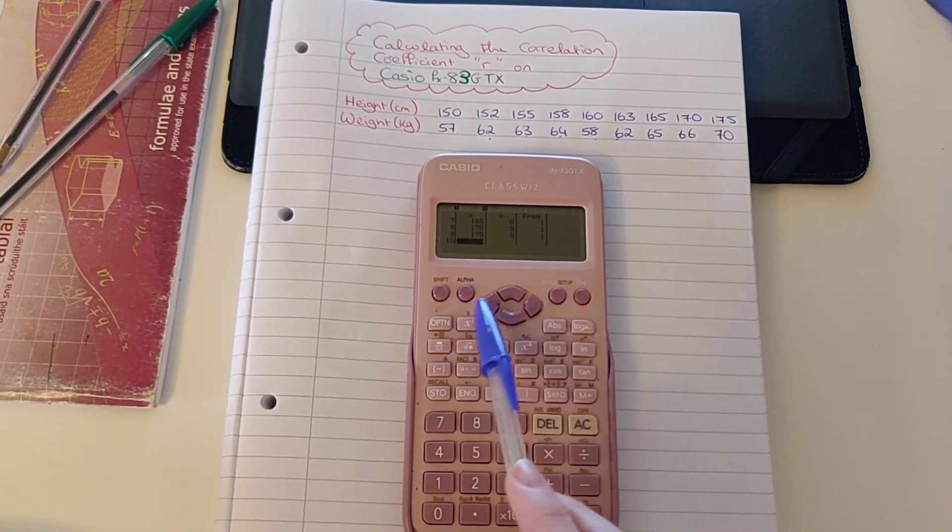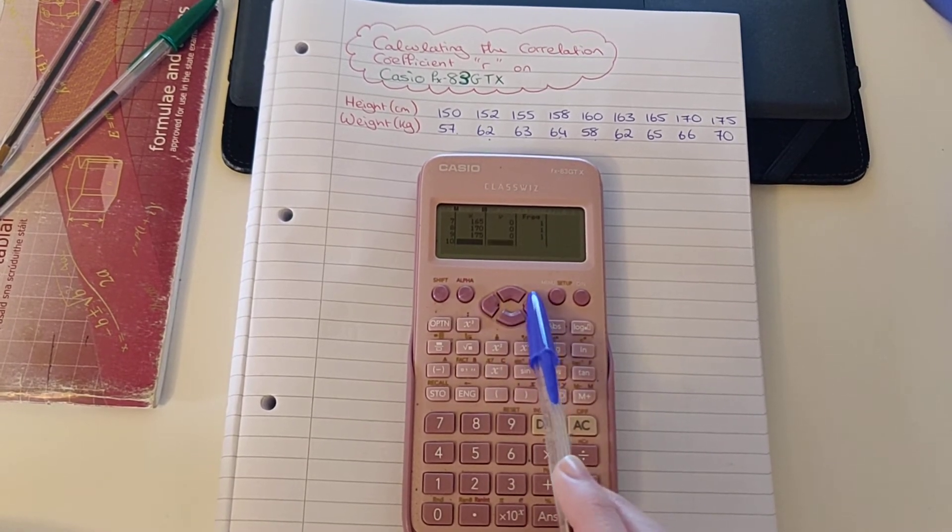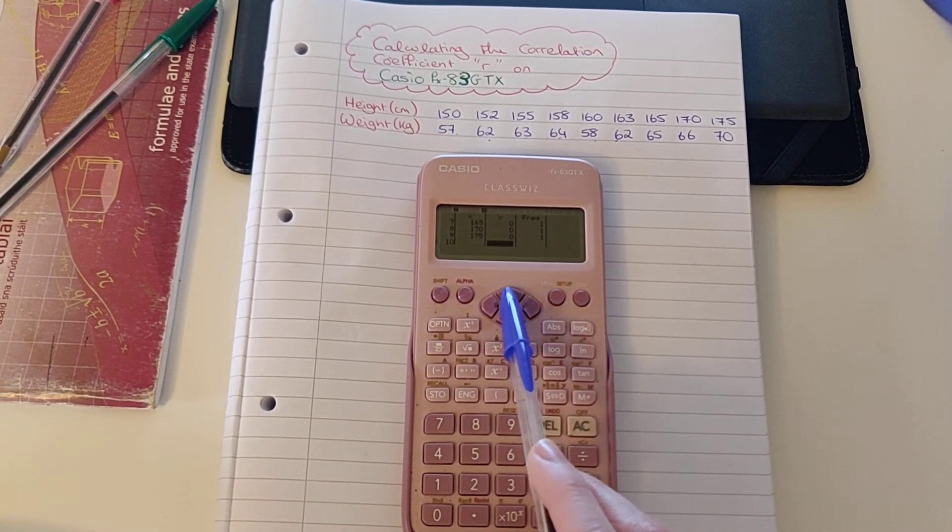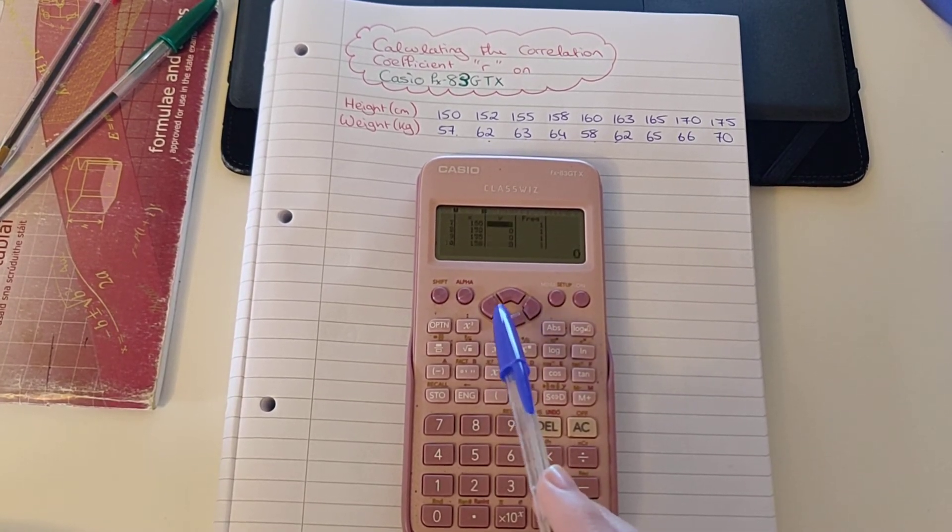So now I'm going to use the navigation keys between the alpha and the menu button to press across to get into the next column, and to press up to get back to the top of the table to our first value.